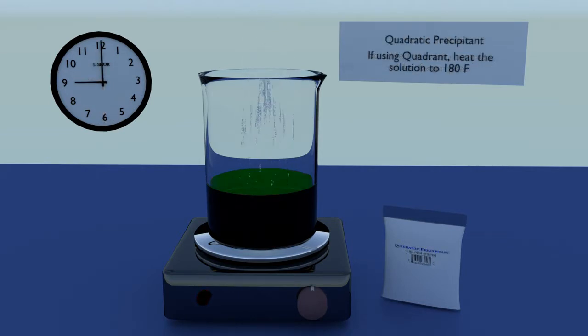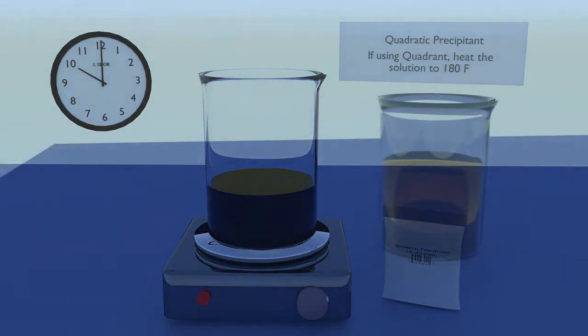Quadratic precipitant: this is an odorless precipitant. It creates large heavy gold particles. The solution should be heated to 180 degrees Fahrenheit for 30 to 60 minutes. Testing for dissolved gold.